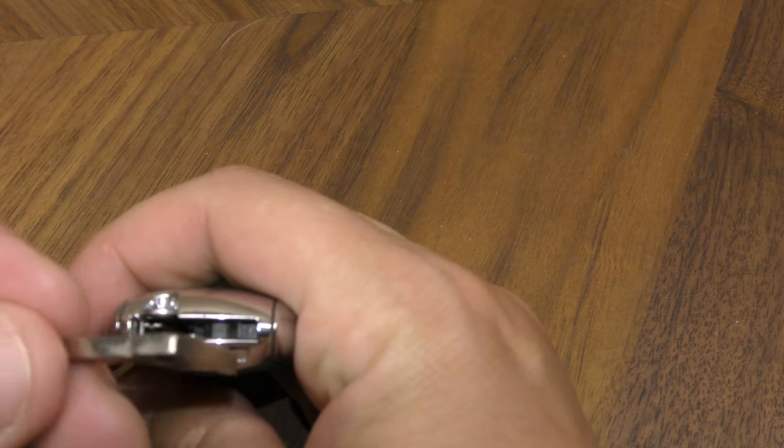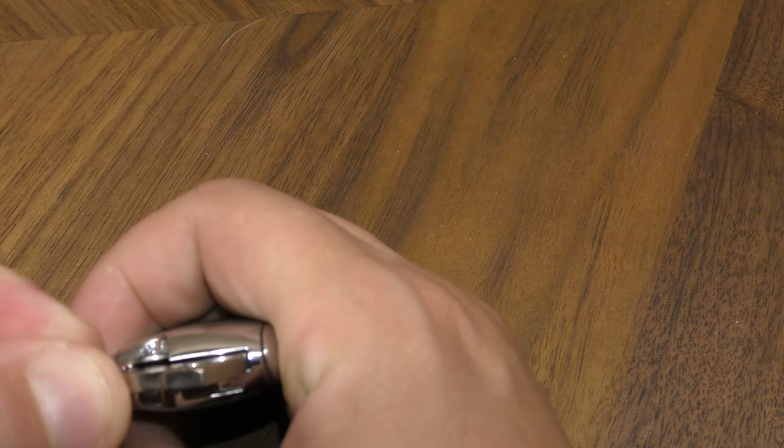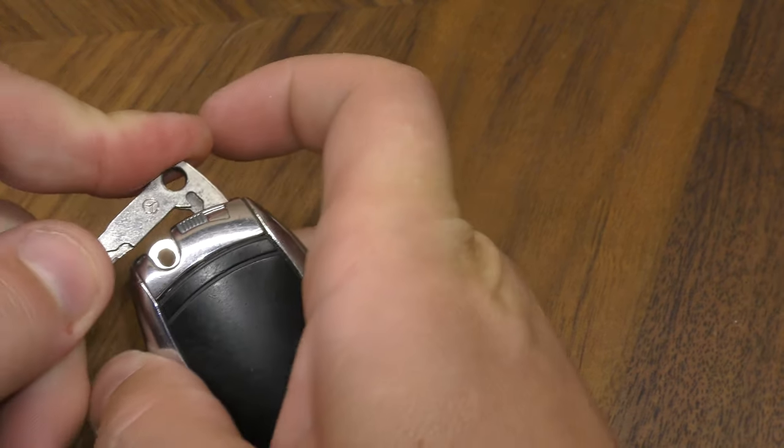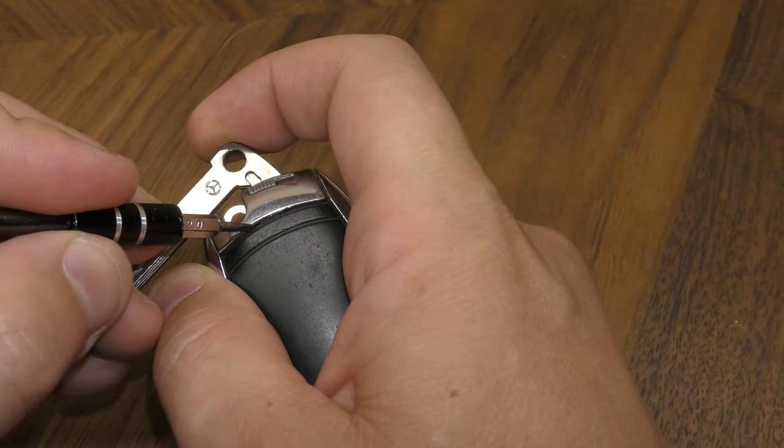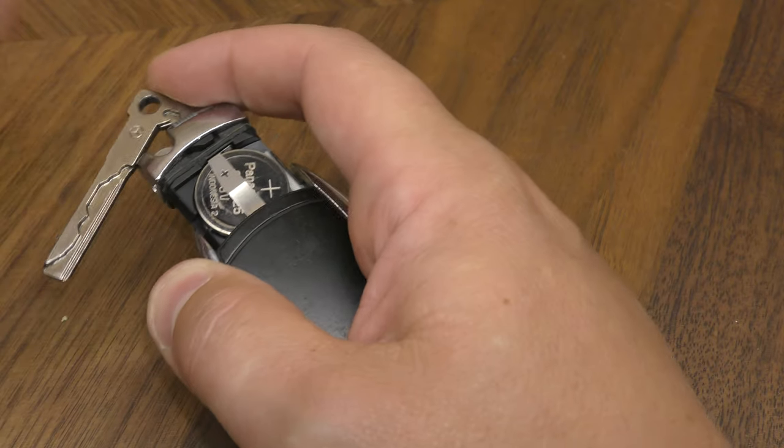Now right here, there's a little slot right there. You want to put your key in that and slide it over. So hold that down and then take your miniature screwdriver and slide out that tray.